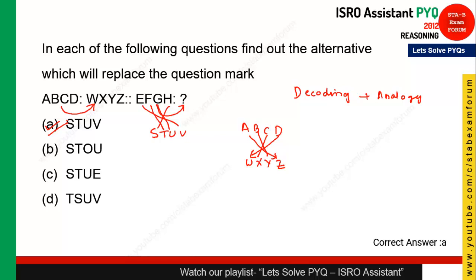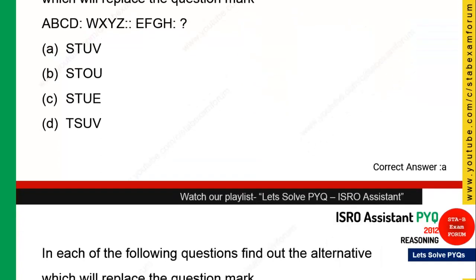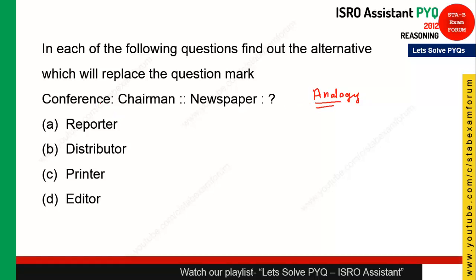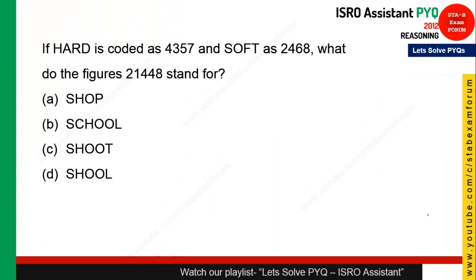The next question is from the category called analogy, where you need to tell the relationship between the given words. Chairman is to conference — generally a conference has a chairman. Similarly, a newspaper has what? The most appropriate answer is editor, as the editor is the head of a newspaper. So option D is the right answer.